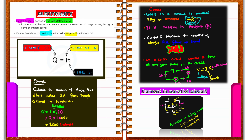In parallel circuits, if a current of 4 amperes is flowing, it will split at the junction depending on the resistance of each branch — for example, 3 amperes in one branch and 1 ampere in another. More current flows through the branch with lower resistance. When the branches rejoin, the total current returns to 4 amperes, meaning current is conserved.